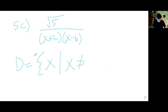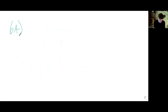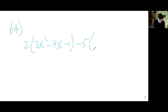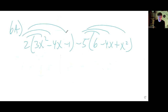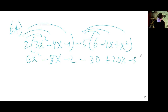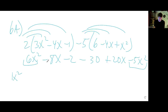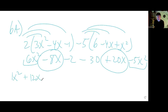6a: Simplify and write in standard form. We have two parentheses: 3x squared minus 4x minus 1, take away 5 times 6 minus 4x plus x squared. Distribute the coefficients to everybody: 6x squared minus 8x minus 2, minus 30 plus 20x minus 5x squared. Combine like terms: squares give 1x squared, the x terms give 12x, and the constants give minus 32.